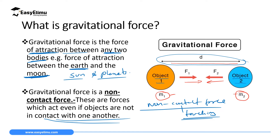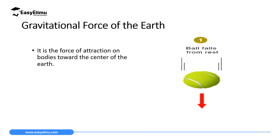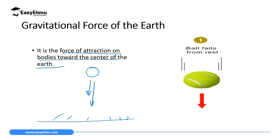The gravitational force of the Earth is the force of attraction on bodies towards the center of the Earth. If you throw a body upwards, the force which makes that body return back to the ground is the gravitational force of the Earth. In this situation we have two bodies — planet Earth and the body being thrown — and there is a force of attraction between them.